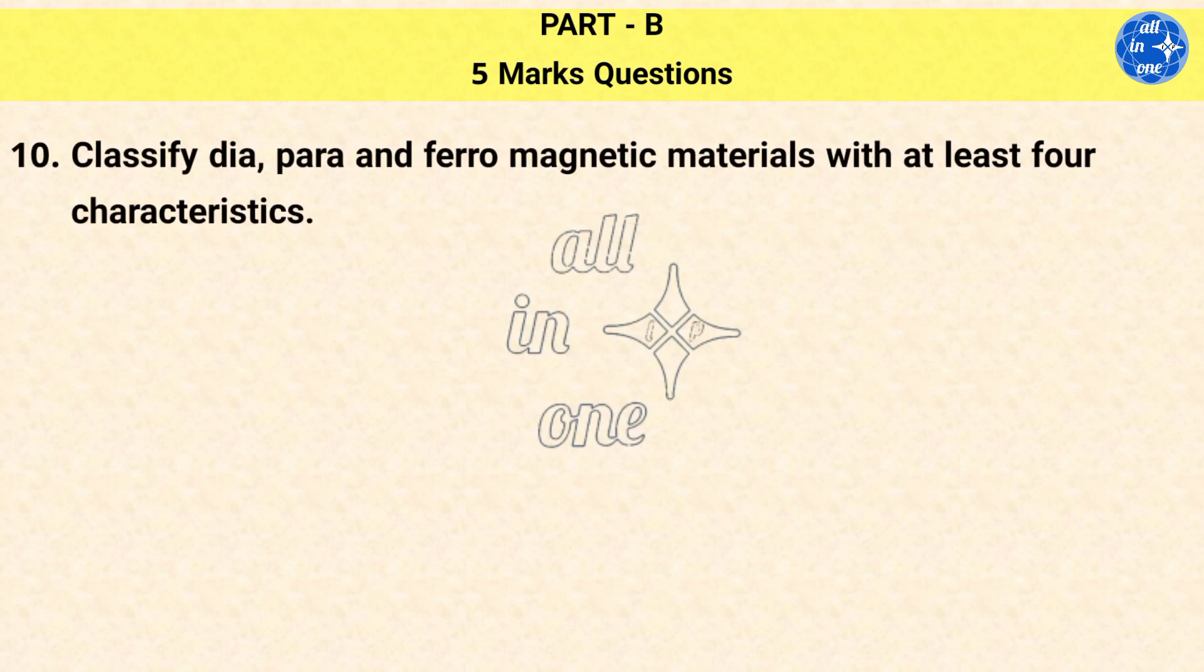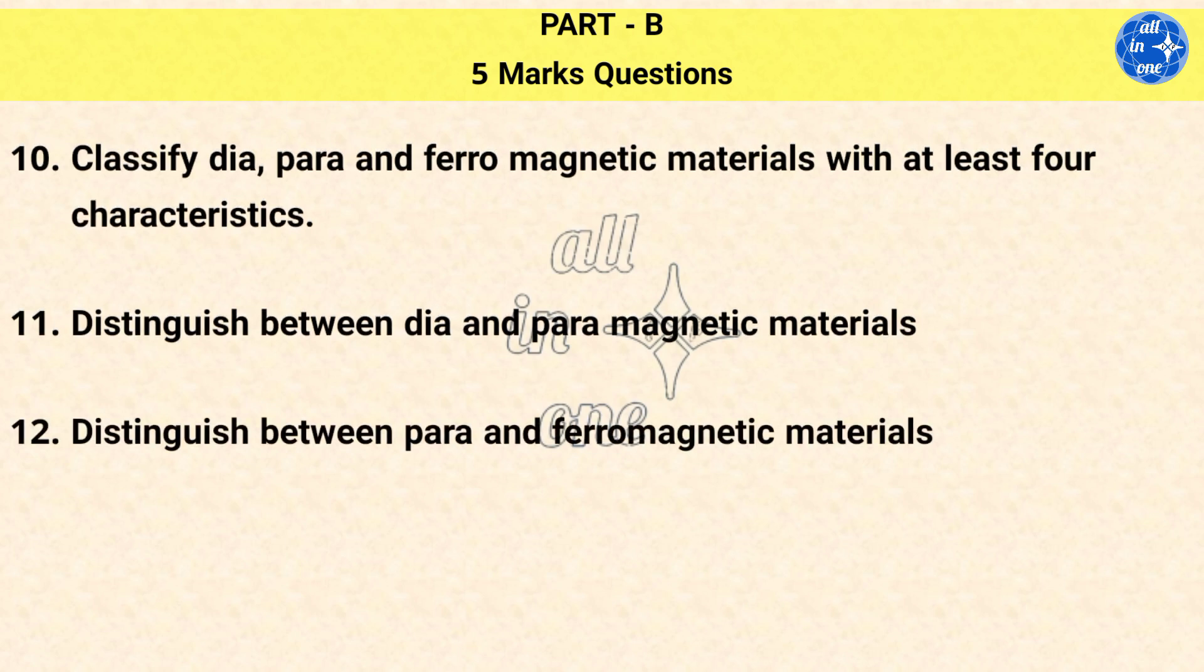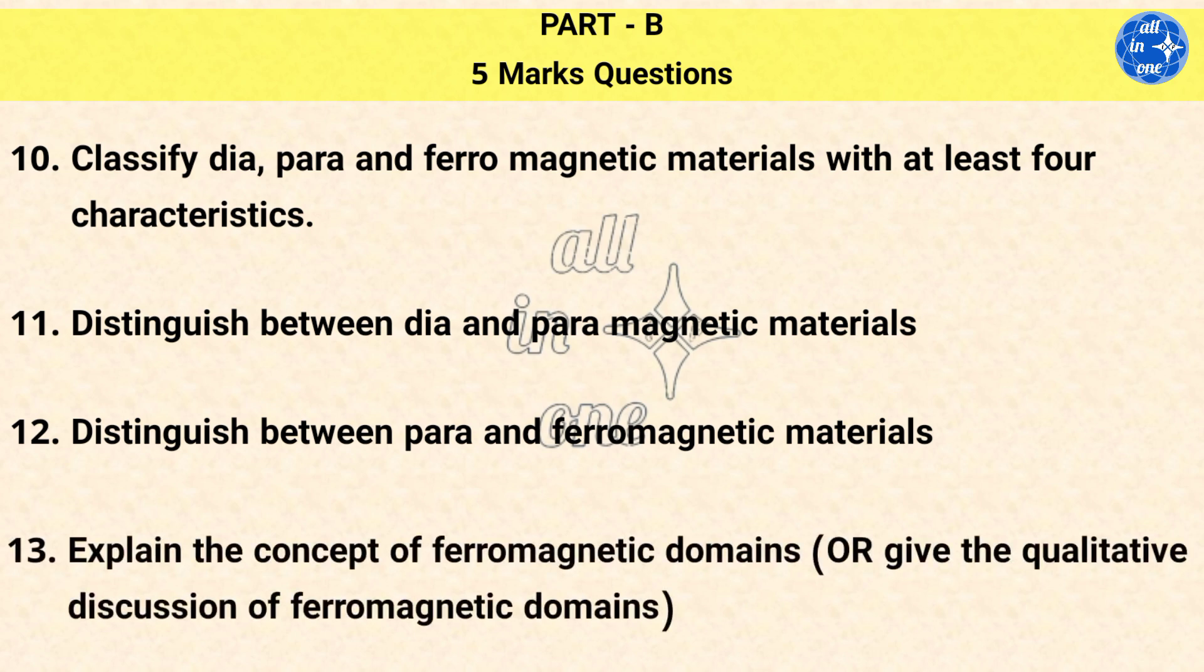Question 10: Classify dia, para, and ferromagnetic materials with at least 4 characteristics. Question 11: Distinguish between dia and paramagnetic materials. Question 12: Distinguish between para and ferromagnetic materials. Question 13: Explain the concept of ferromagnetic domains or give the qualitative discussion of ferromagnetic domains.